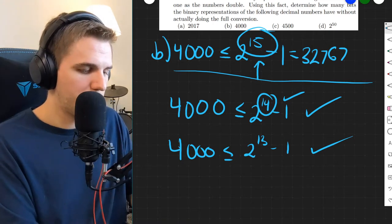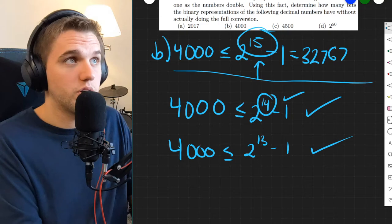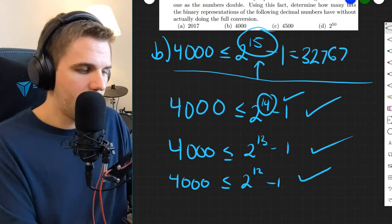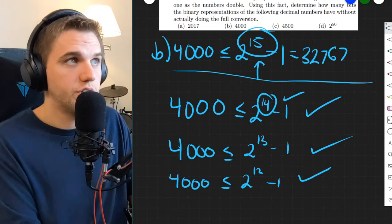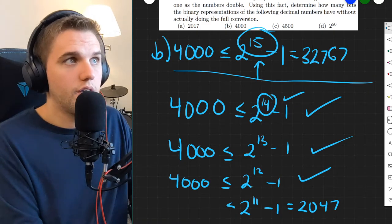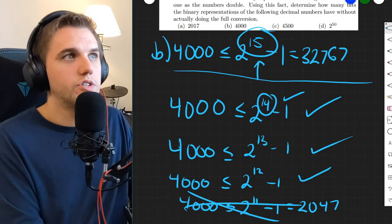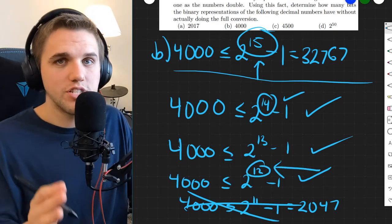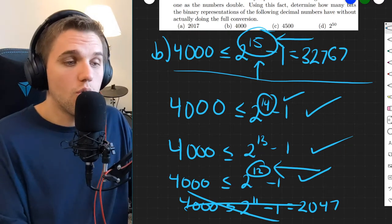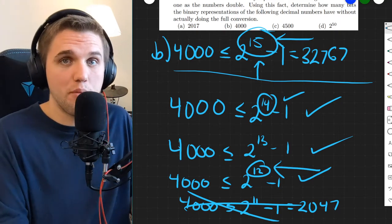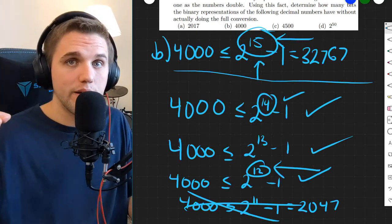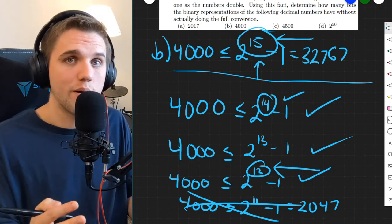What about two to the 12th power minus one? 4,000 is less than that, so 12 bits works. Two to the 11th minus one is 2,047 — is that less than 4,000? No. So 12 bits is the smallest number of bits you can use to represent 4,000 in base two. You can start by overestimating the number of bits and bring it down, or start low and work your way up — either approach will find the minimum.